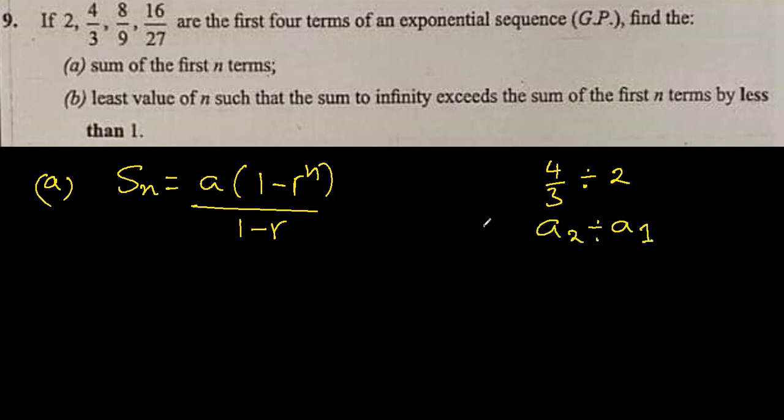This cancels to 2/3. This is r, and it is less than 1, so the formula is correct. So let's find the sum of first n terms. The first term a is 2, so S_n = 2(1-(2/3)^n)/(1-2/3).